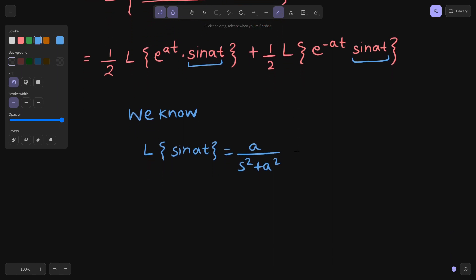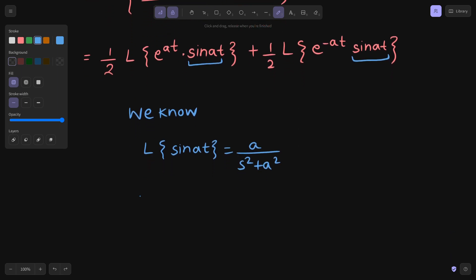Now Laplace transform of e power at, if we multiply by e power at to sin at, what will happen is to the Laplace transform outcome that was there in the previous step, just replace this s by s minus a.